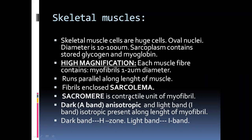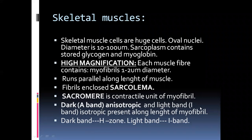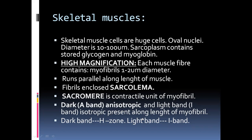When we observe the muscle fiber, we see that it has a systematic arrangement of dark and light bands. The striated muscle has alternating dark and light bands. The light band is known as the I band, which is isotropic. The dark band is called the A band — it absorbs more light, while the I band reflects light and appears lighter in shade. Along the whole length of the myofibrils, the dark A band has an H zone.